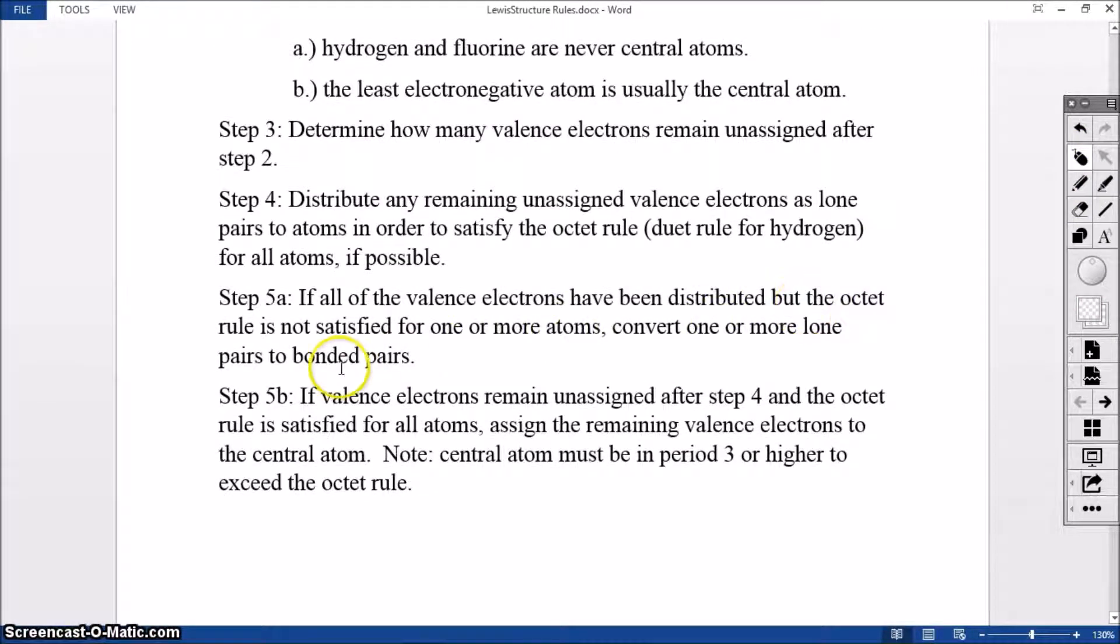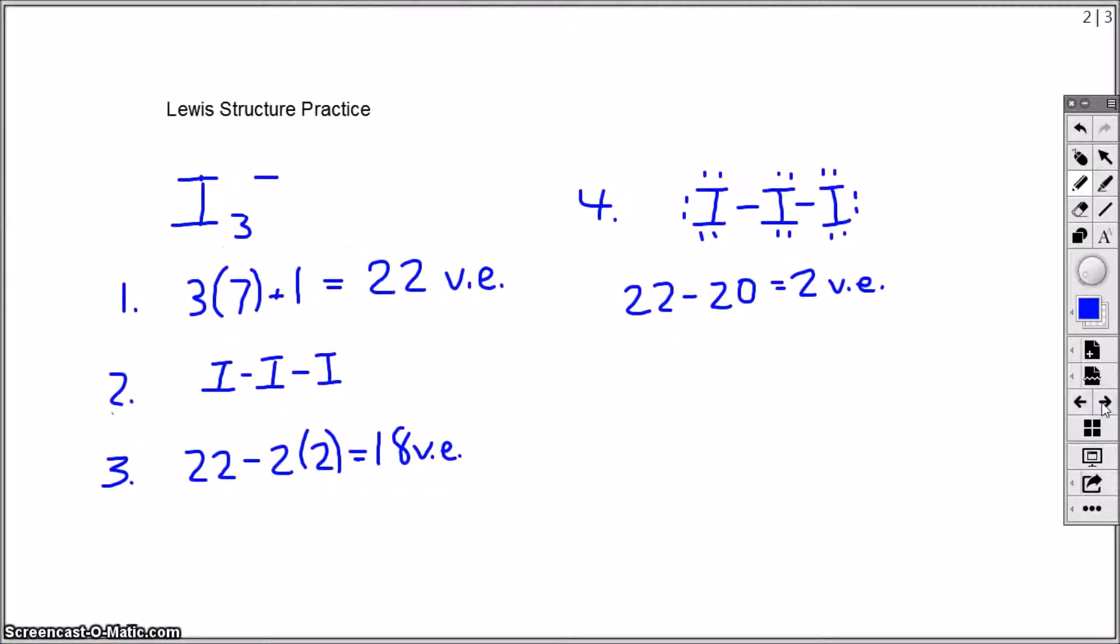This is a case where we need to apply step 5B, where if we have valence electrons remaining unassigned after step four and the octet rule is satisfied, then step 5B says to assign those remaining valence electrons to the central atom, as long as the central atom is an atom in period three or higher.